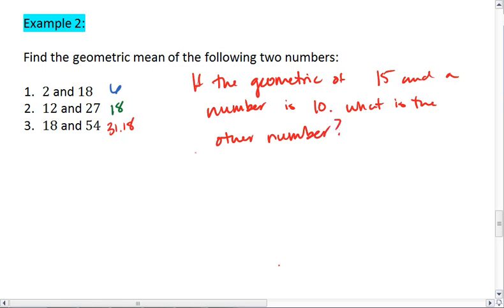In which case, put your geometric mean, the 10 on one side, and we square it. And we set it equal to the two numbers being multiplied together. So 15 and our unknown number. We get 100 equals 15x.